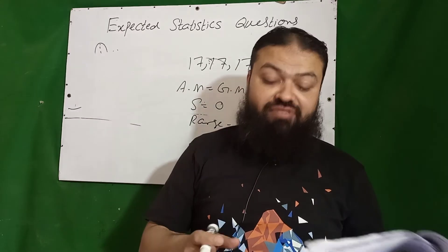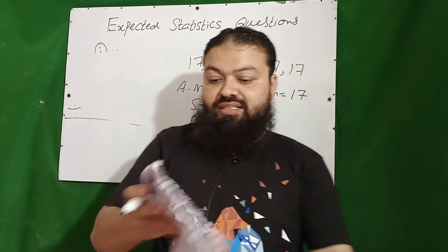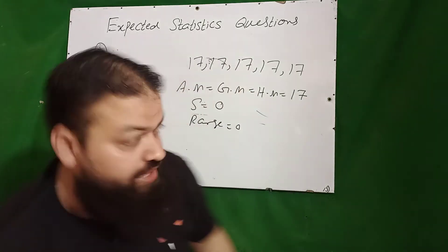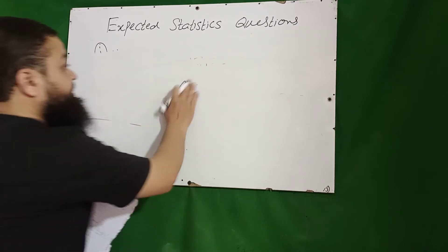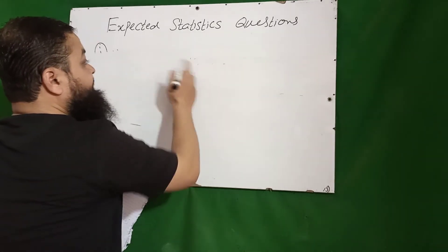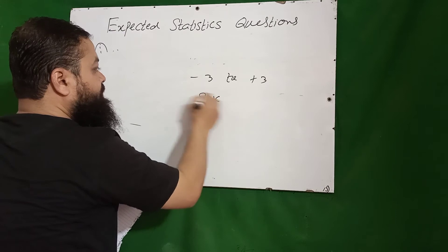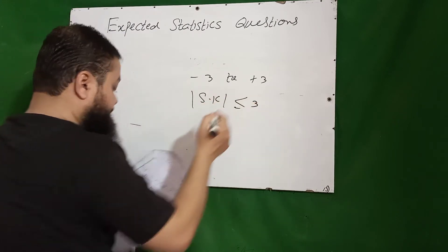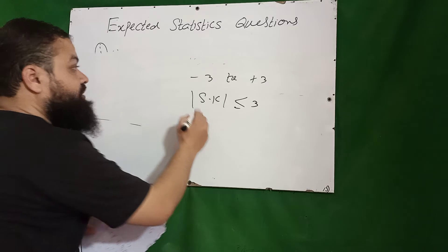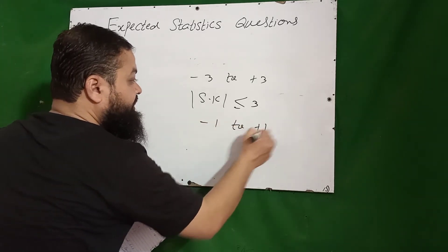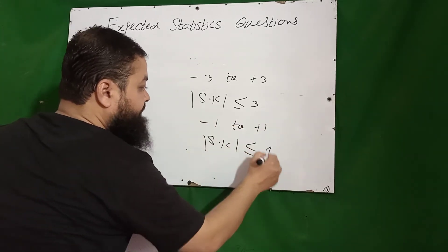The ogive curve is used to determine the median, lower quartile, upper quartile, deciles, and percentiles — a very important one. The range of Pearson's coefficient of skewness is minus three to plus three, which can also be written as |Sq| ≤ 3. The range of Bowley's coefficient of skewness is minus one to plus one, written as |skewness| ≤ 1.